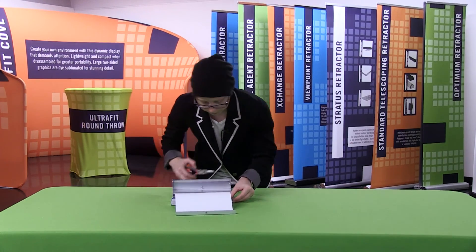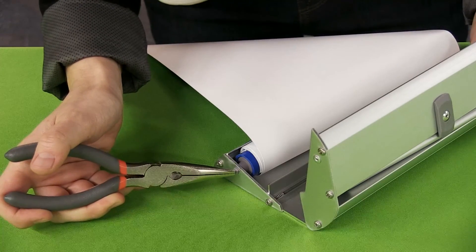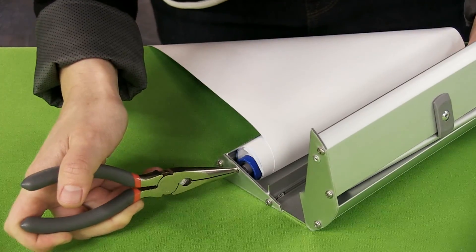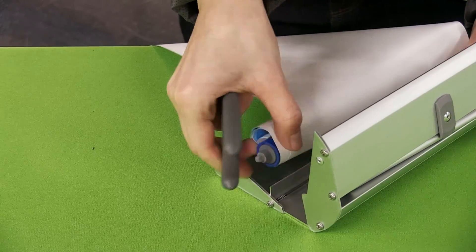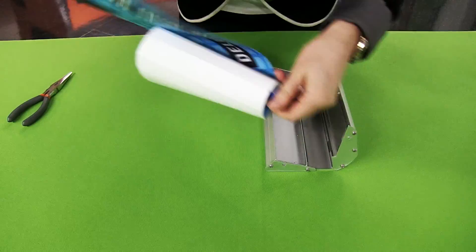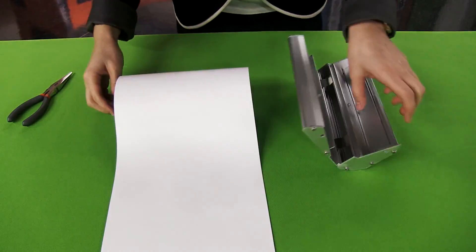So what you want to do using the needle nose pliers is push in one side of the retractor and then slowly lift the roller out. Now you want to completely lift it out, and I'm going to unroll my graphic.